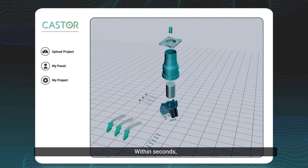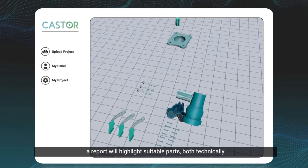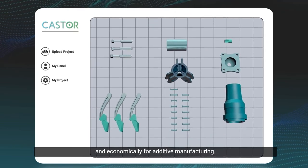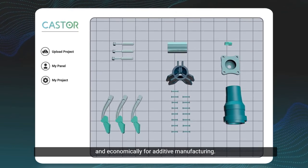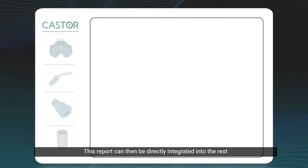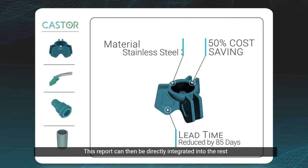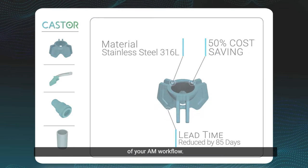Within seconds, a report will highlight suitable parts both technically and economically for additive manufacturing. This report can then be directly integrated into the rest of your AM workflow.